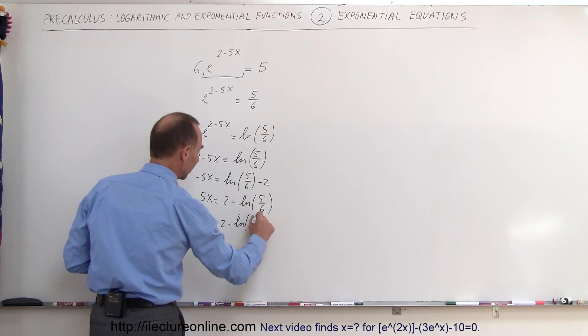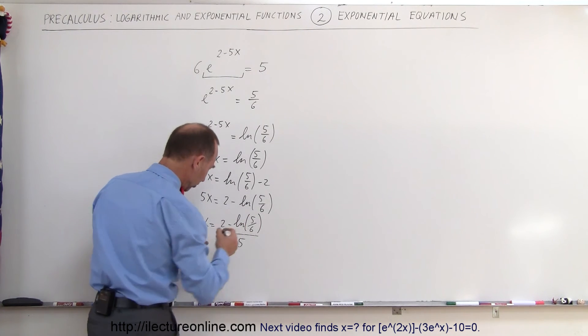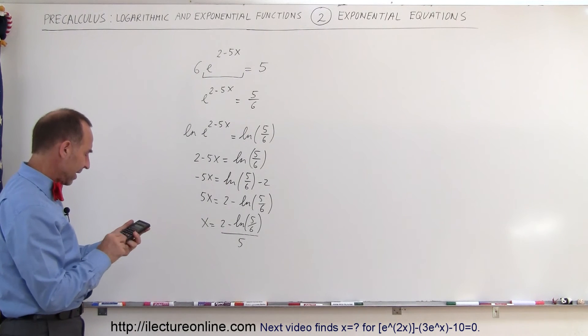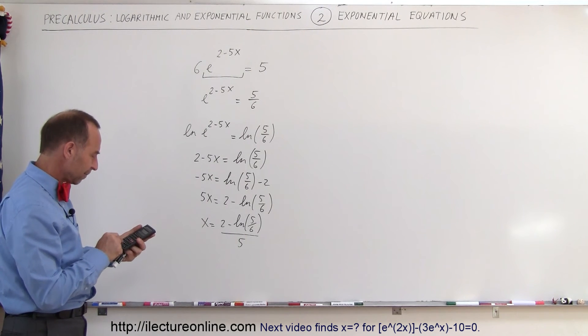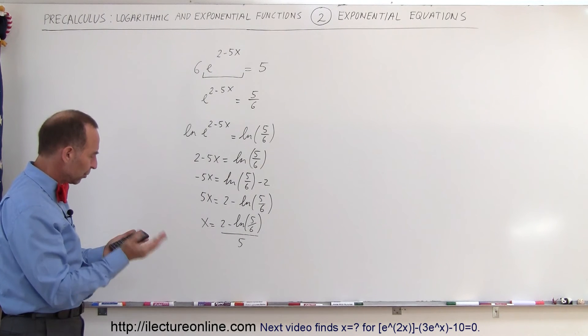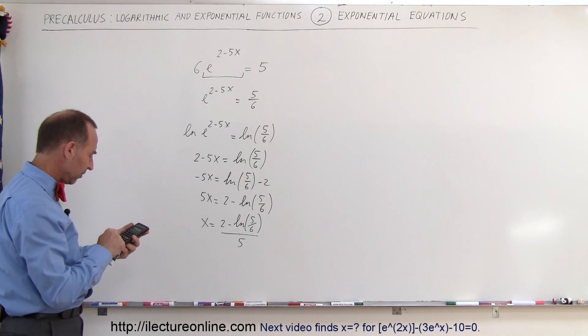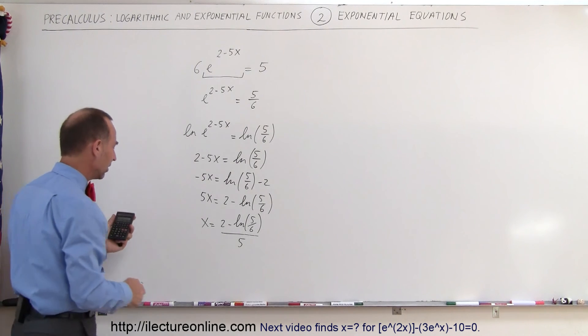Now we just need a calculator to find what that equals. We take 5 divided by 6, take the natural log of that (which is negative), subtract that from 2 (so that becomes positive plus 2), and then divide by 5.